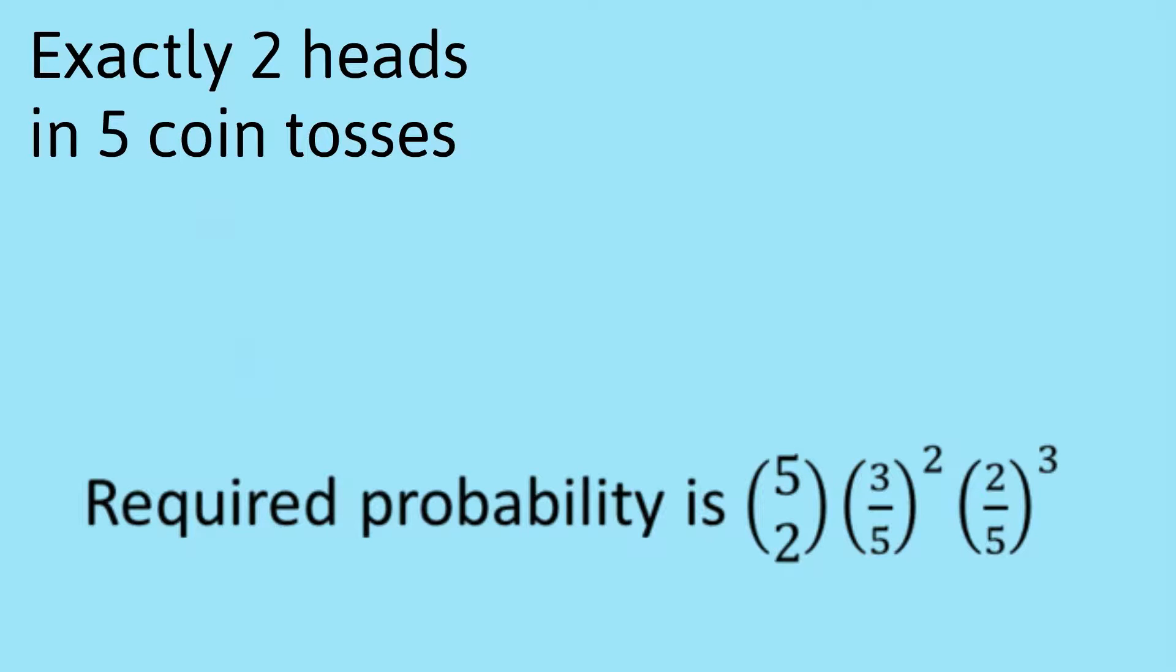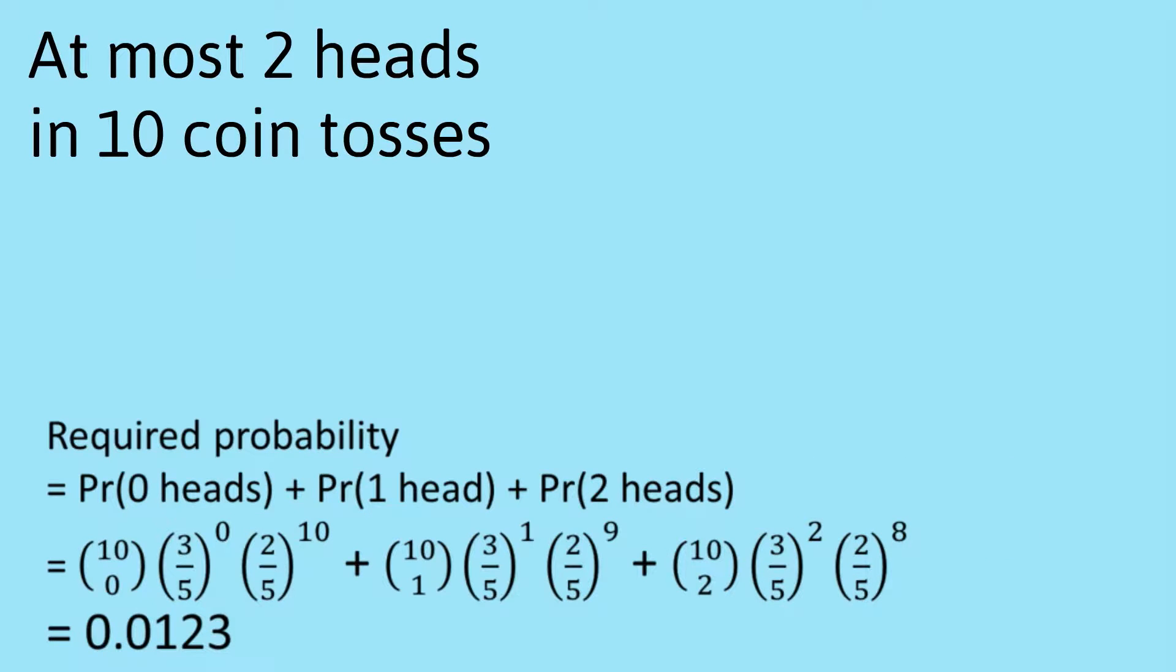Okay, so let's go on to the second question. What's the probability of at most two heads in ten coin tosses? I've written here the required probability is the probability of zero heads plus the probability of one head plus the probability of two heads.